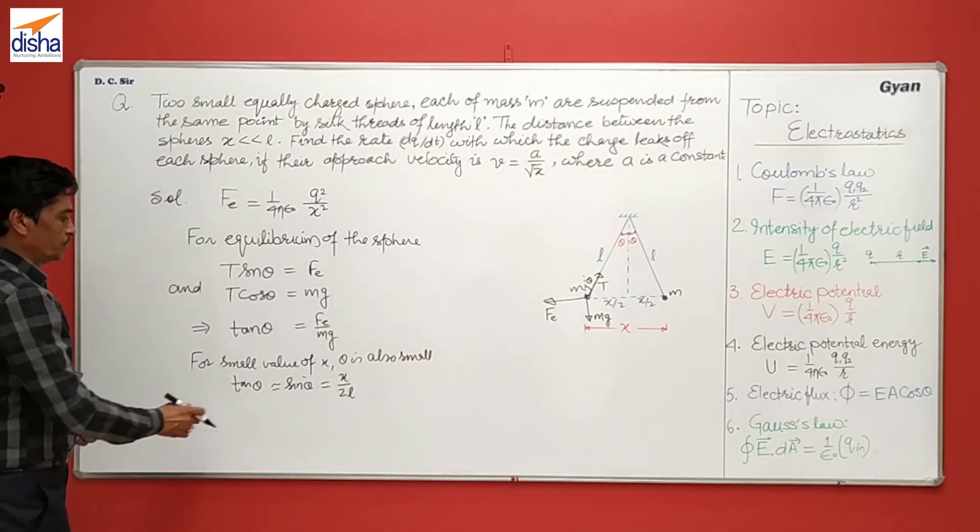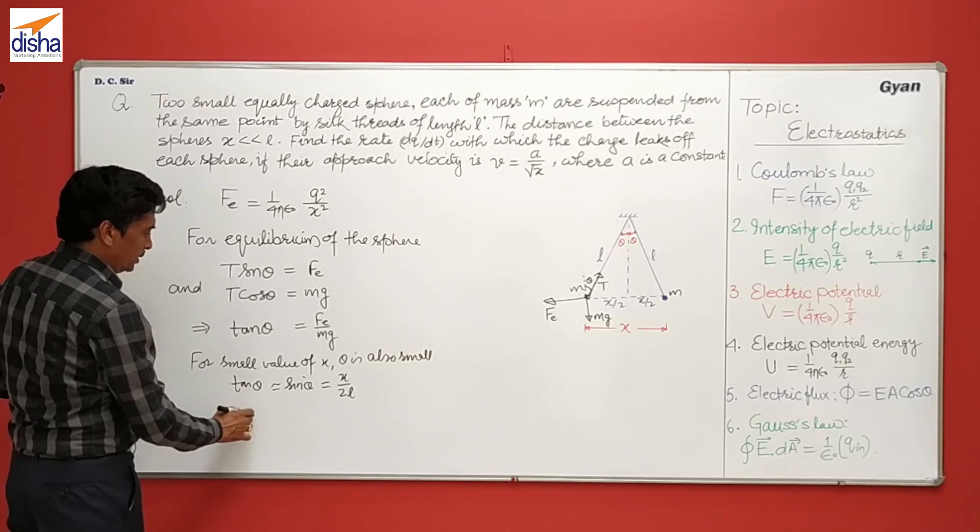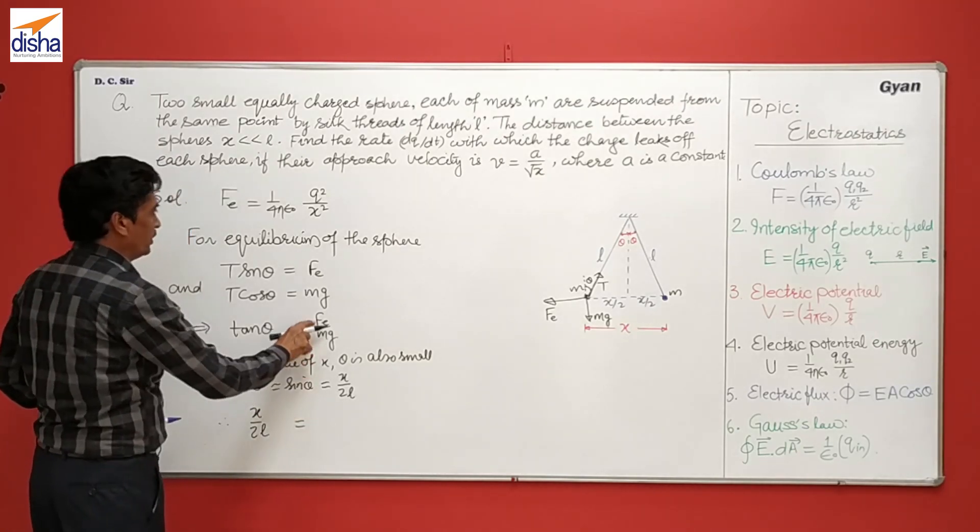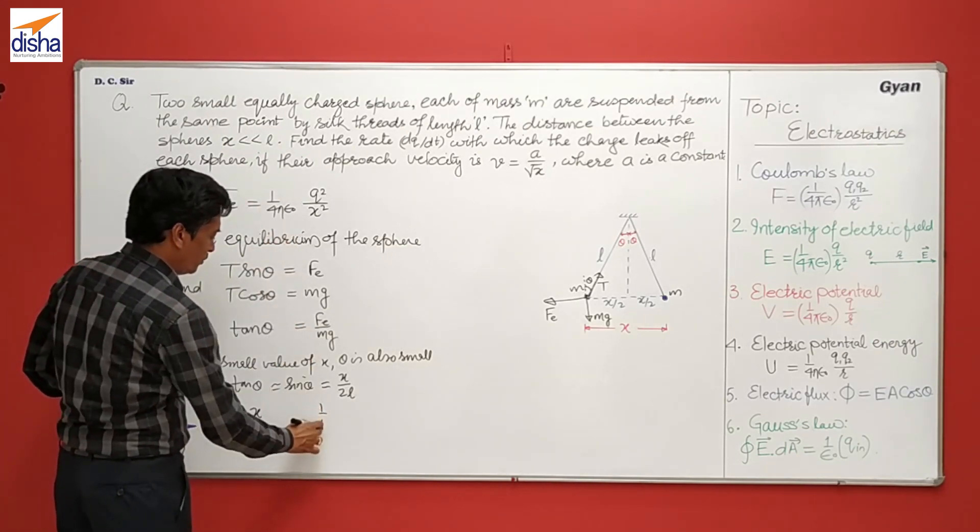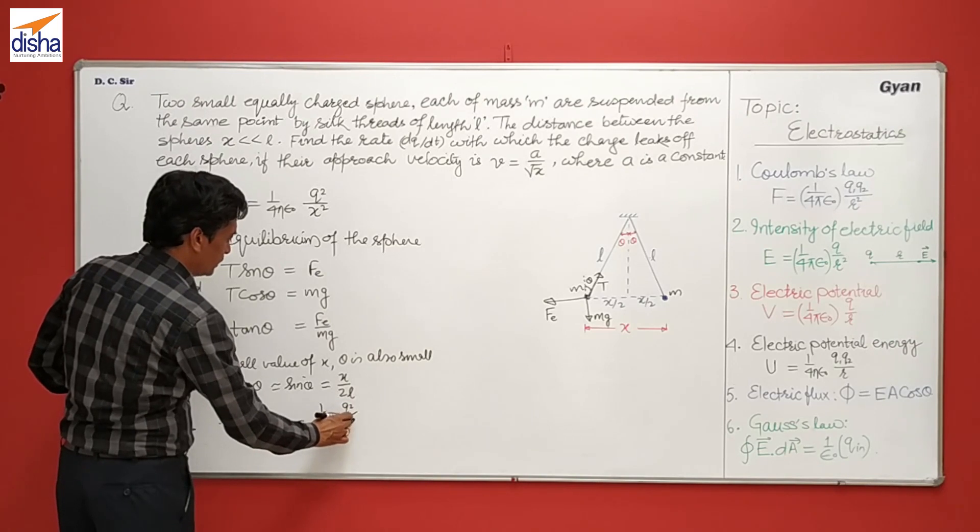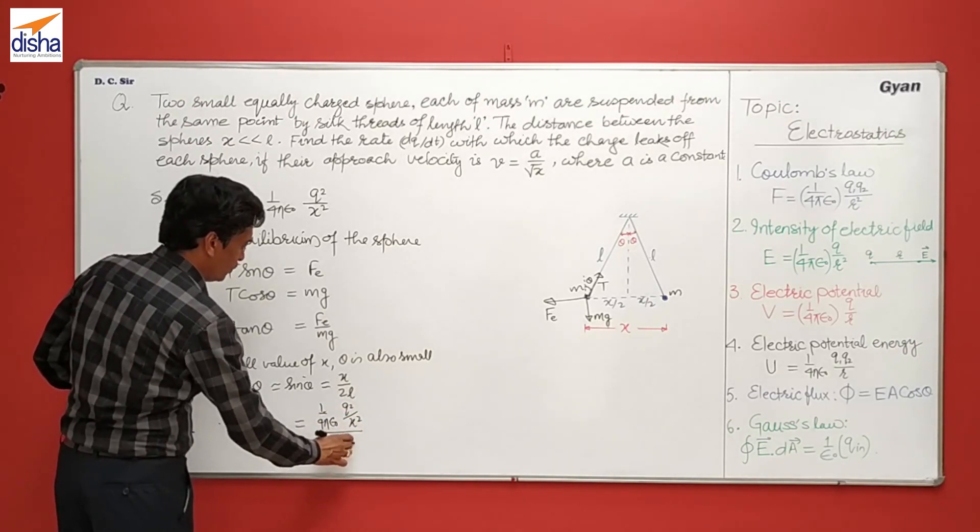So now you put this value here, x upon 2L, and substituting the value of Fe from this equation, 1 upon 4 pi epsilon naught, q squared divided by x squared divided by Mg.